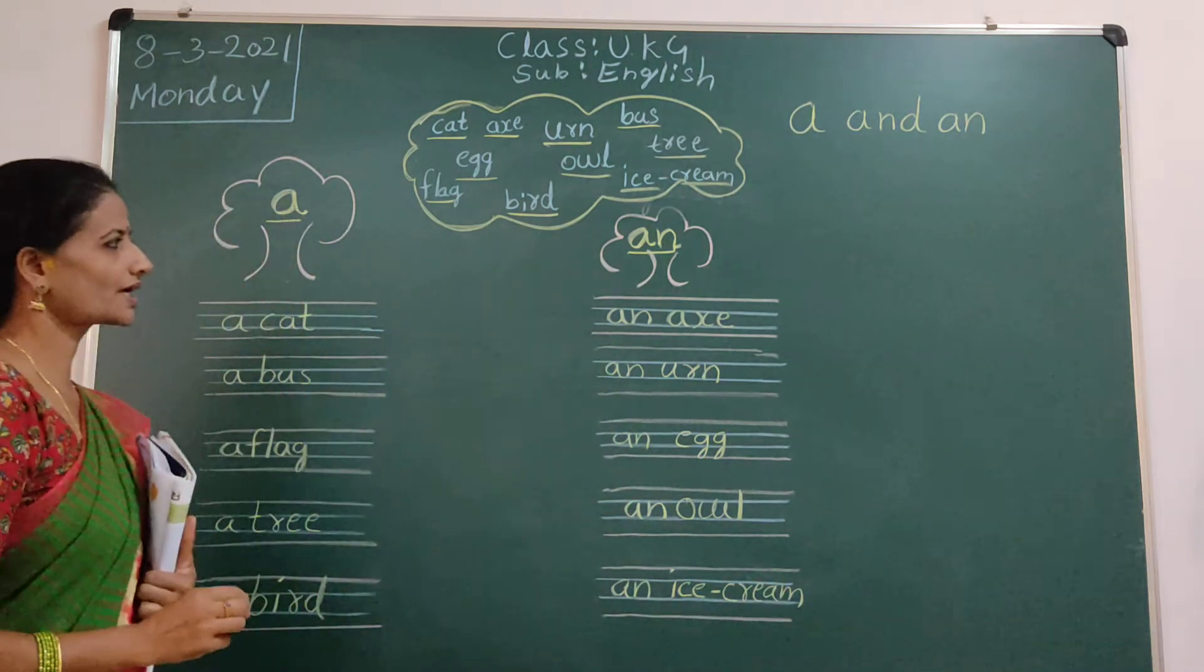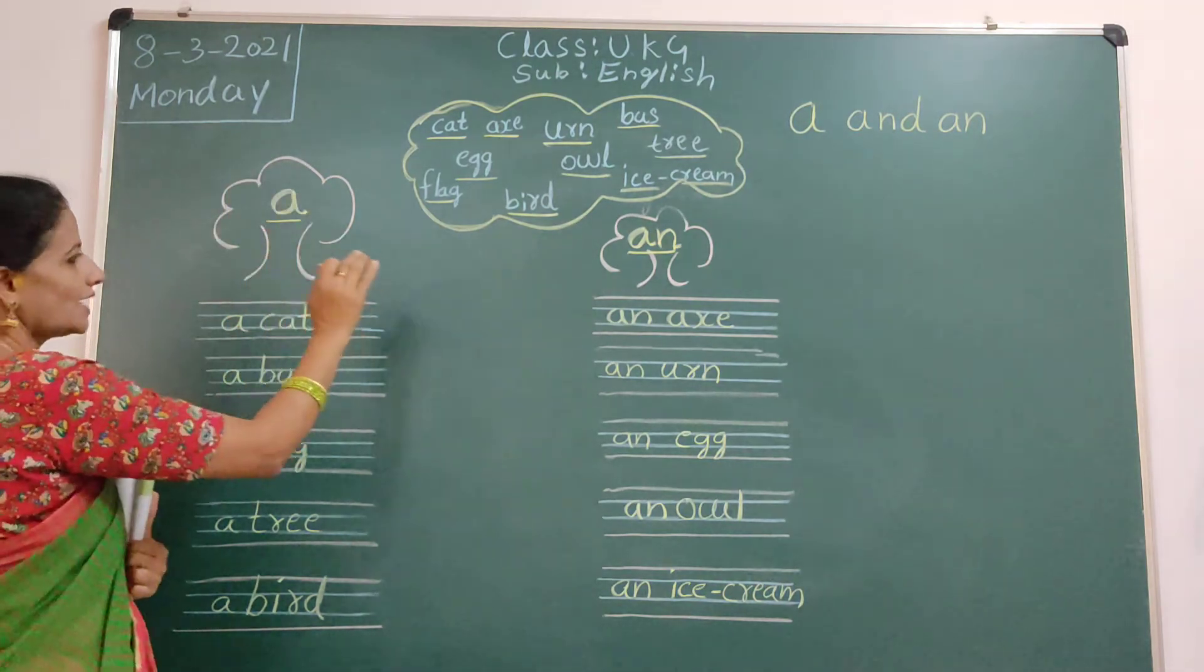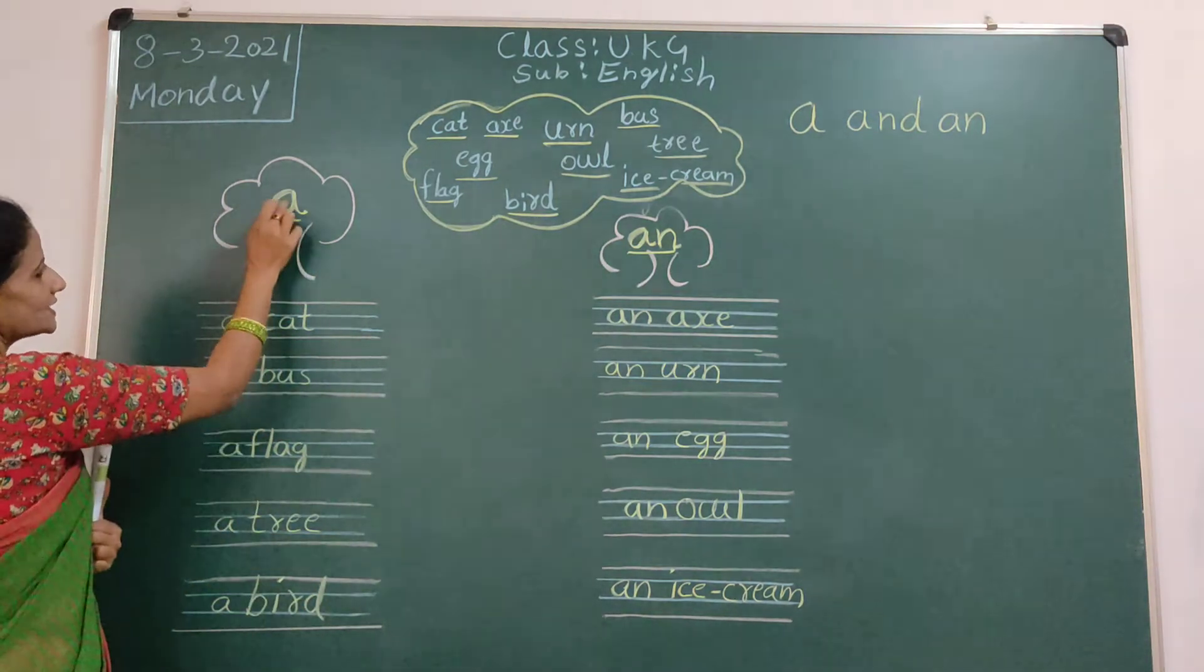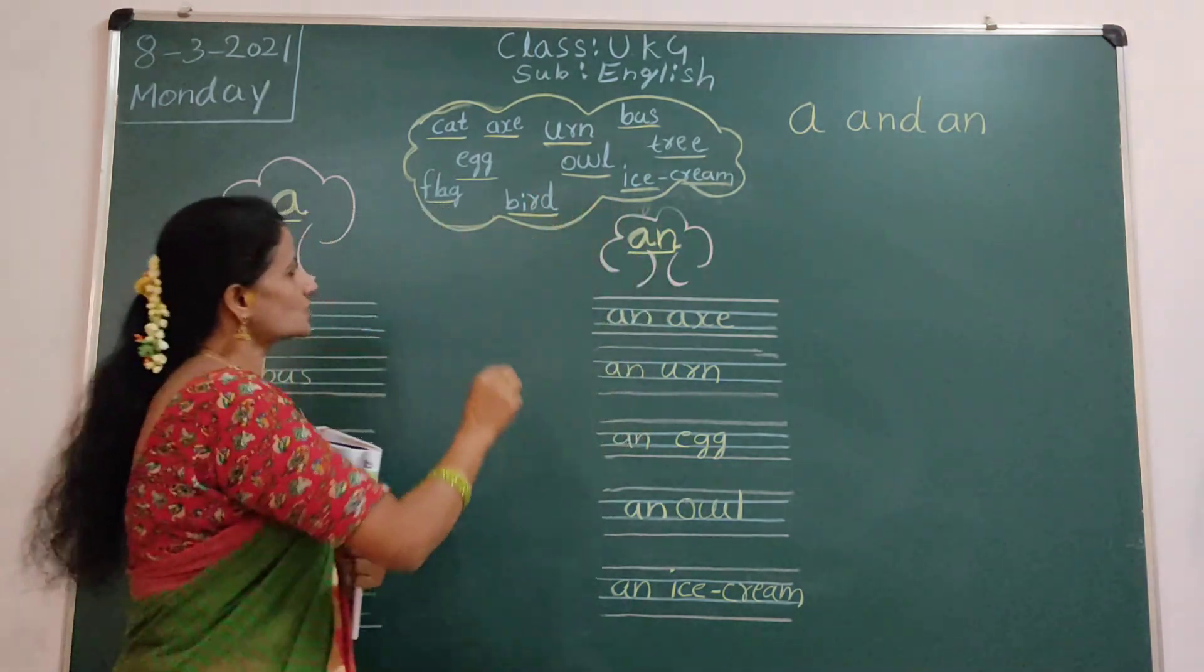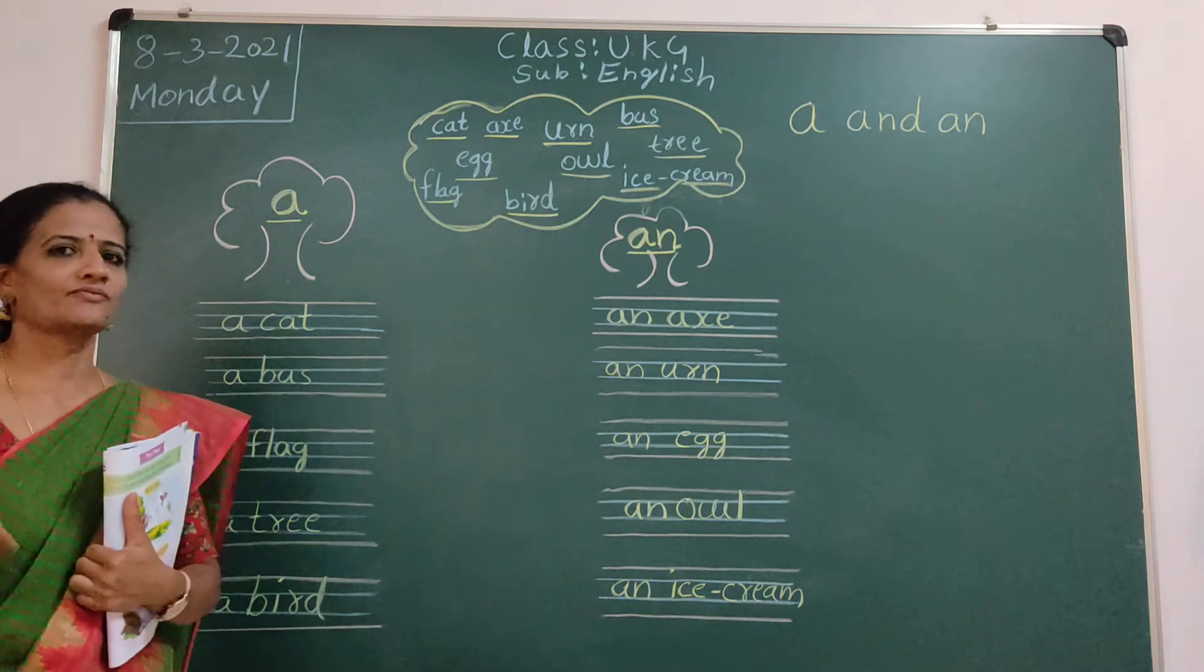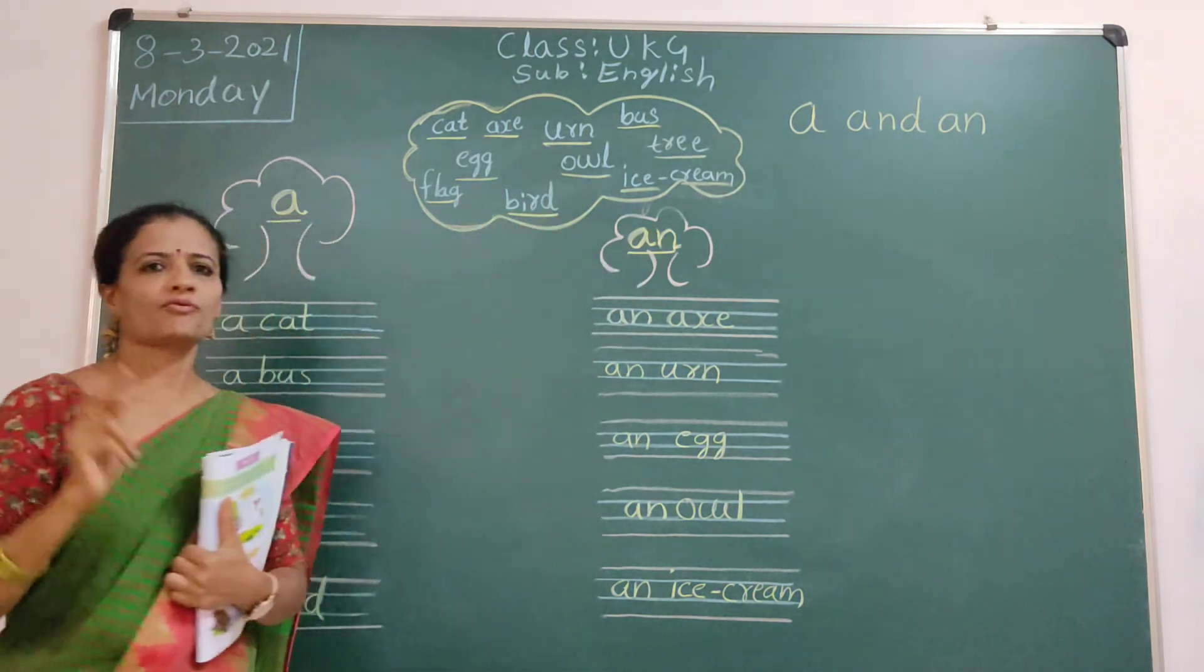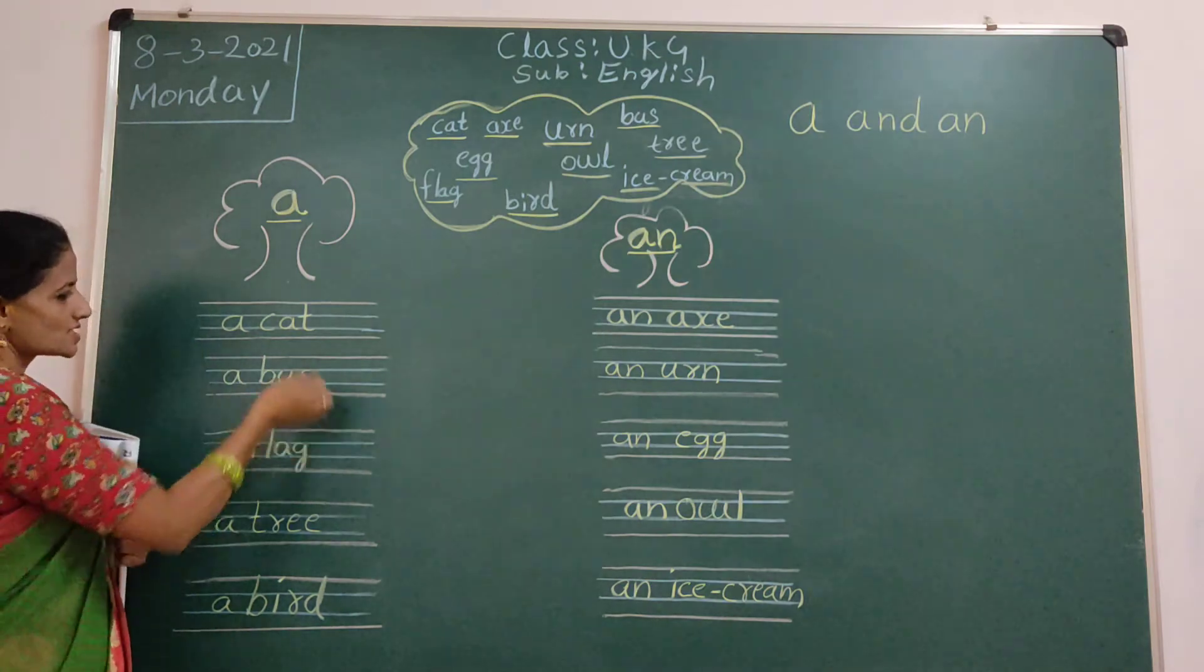Like this. Okay. Here. You draw one big tree. This side also. You draw one big tree. Inside in the tree. This side write egg. Here. An. So, these four. You will see. First letter. First letter will come vowels means you will use An. First letter will come consonant means we will use A.